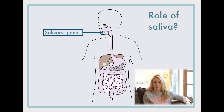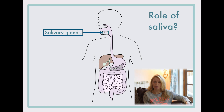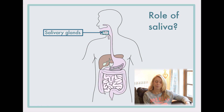The salivary glands produce saliva. Saliva first of all makes the food nice and moist so it can be swallowed easily, and also it contains an enzyme known as amylase, which is important in breaking down a carbohydrate called starch in our food. I'm not going to go too much into that because I'll cover it in detail in my chemical digestion video, so please have a watch.